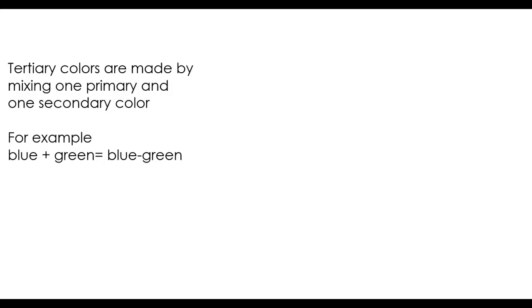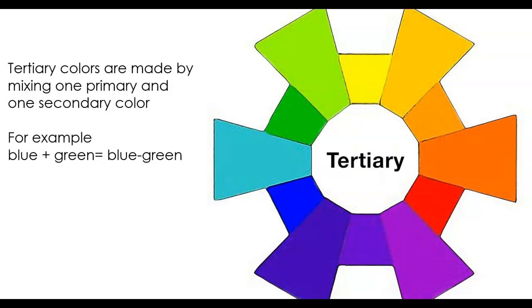Tertiary colors are made by mixing one primary plus one secondary. Tertiary means three. For example, blue plus green equals blue-green. Those are tertiary colors.